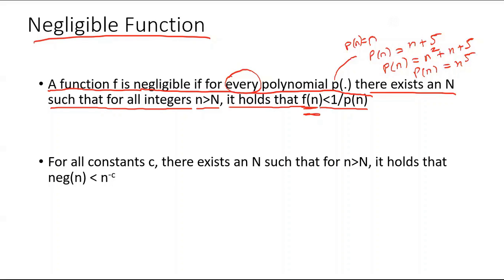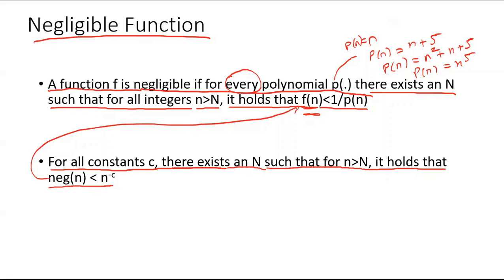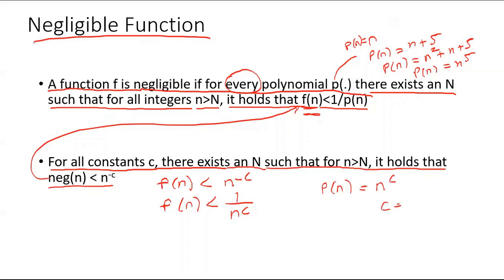Another equivalent way to say the same thing: for all constants c, there exists an N such that for all n greater than N, the negligible function f(n) is less than n to the power minus c. So f(n) is less than n^(-c), which is the same as 1 over n^c, where p(n) is n^c and c is some constant.